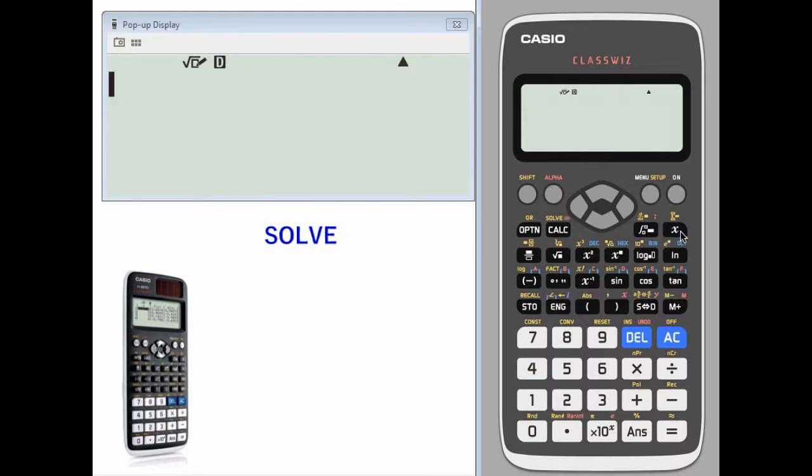So let's say we wanted to calculate or solve x squared minus a value, we'll call it b, when it equals zero.